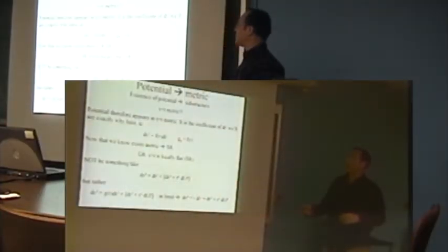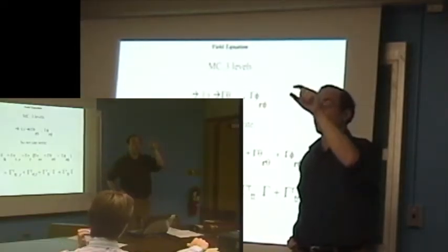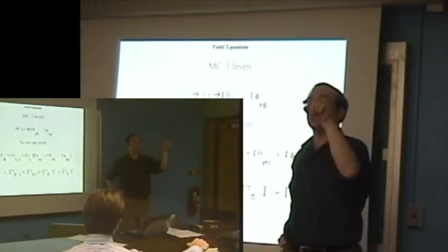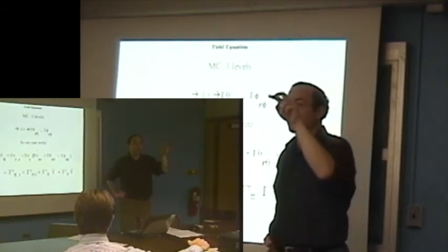We're going to label this g_tt. This function here, which is in front of dt squared, which is dt times dt. The function in front of it, I'm going to call g_tt, labeling it by two t's because it's dt times dt.